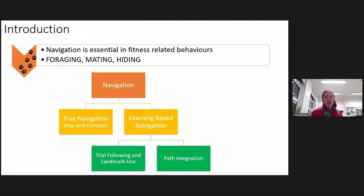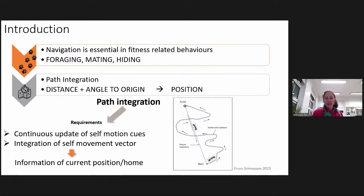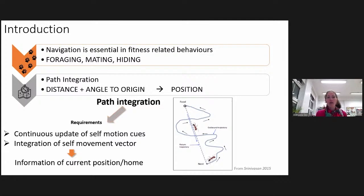Path integration is the use of self-motion information to navigate in space, and this is what we're going to focus on today. To be able to path-integrate, individuals need to be able to record the distance and angle to the origin to be aware of their position in space. For example, here is a drawing of a little ant following an outbound trajectory. During this outbound trajectory, she will continuously update self-motion information and integrate self-movement vectors, including information about distance and angle relative to her point of origin — her nest.